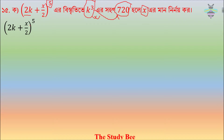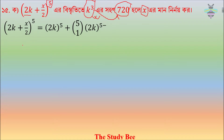2k plus x divided by 2, whole to the power 5 is equal. It is 2 theta, which means x to the power n plus n of 1.